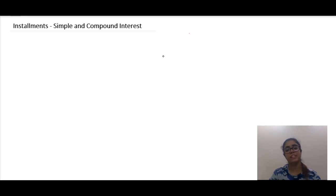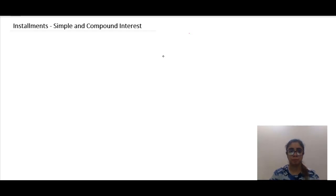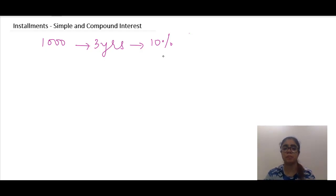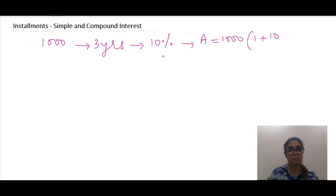Now let's look at the concept of installments at compound interest. It is the same as simple interest — only the way of calculating interest changes. Suppose I borrow 1000 rupees from you for three years at 10 percent per annum compound interest, to be returned in three equal annual installments. The total amount = 1000 × (1 + 10/100)³ = 1000 × (11/10)³.